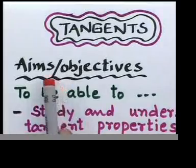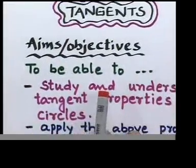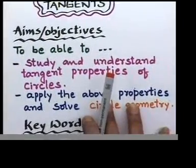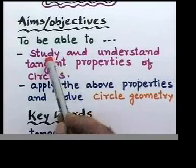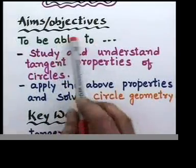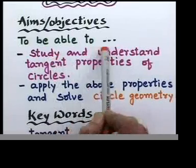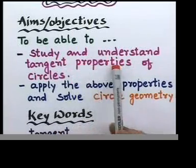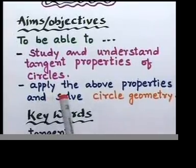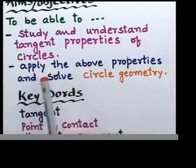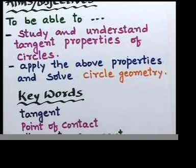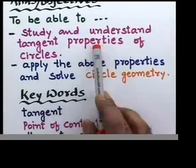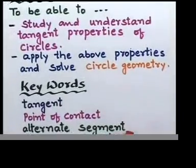Let's look at the aims of the day. The first aim is to study and understand tangent properties of circles — we need to define a tangent first. By the end of the lesson you should understand the meaning of tangent properties of circles. The second aim is to be able to apply those properties and solve circle geometry problems.